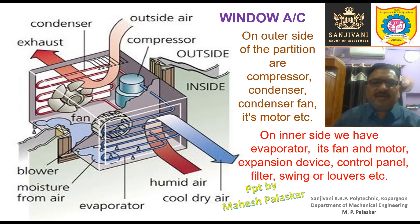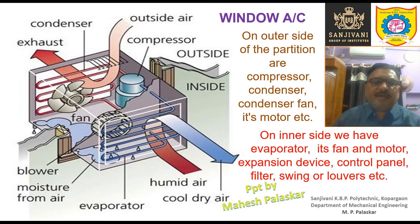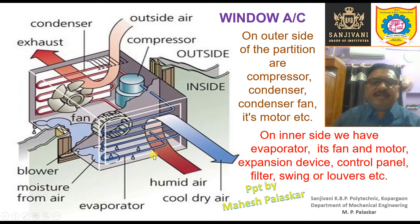On the inner side there is a filter. The inside air is first filtered before entering the Window Air Conditioner, so that dust particles do not damage the inside components, especially the evaporator coil. There is also a swing or louvers to change the direction of the air as per requirement. With automatic swing, the direction changes left, right, up, and down automatically.